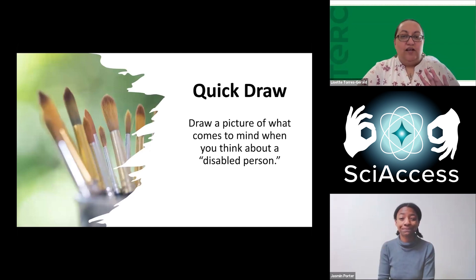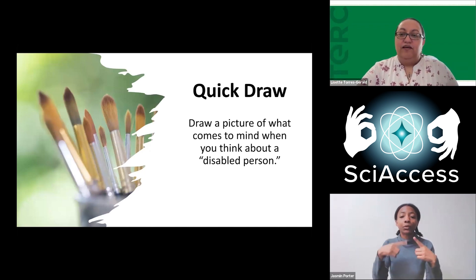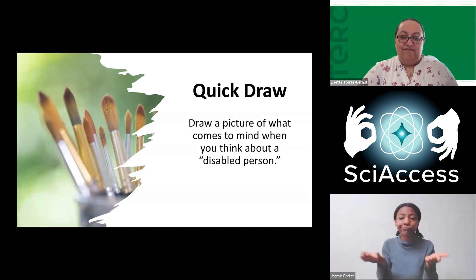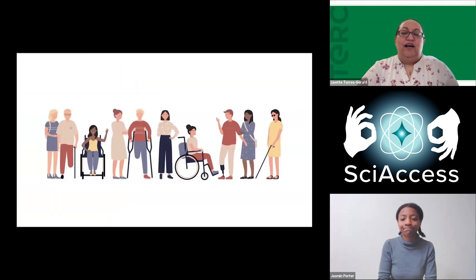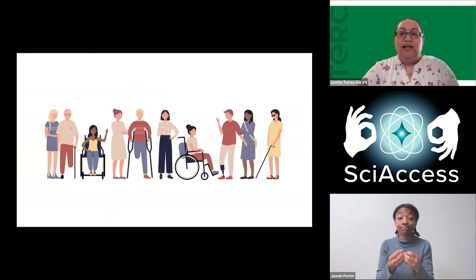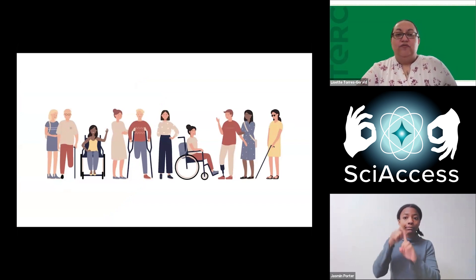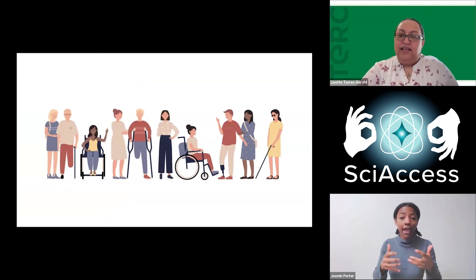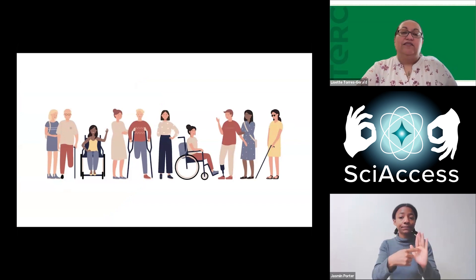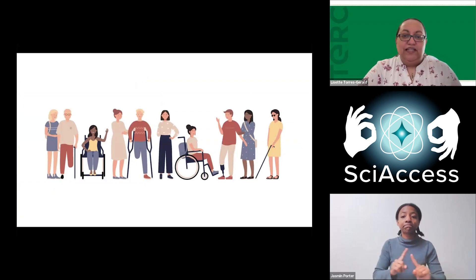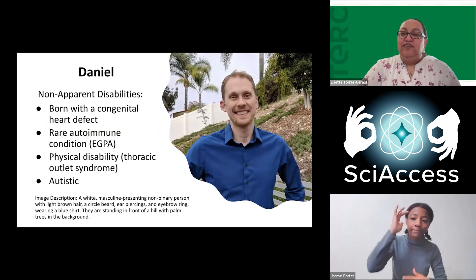Just a real quick exercise for a few seconds. Picture what comes to mind when you think about a disabled person. I can imagine that a lot of you, the first image that came to mind was someone who was in a wheelchair. But for many of us, especially Daniel and I, we identify as individuals with non-apparent disabilities. Here we have an image of a variety of different kinds of people from different cultural backgrounds and different impairments and disability types.